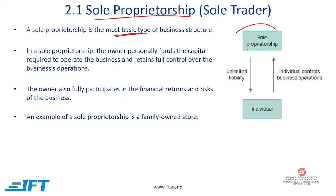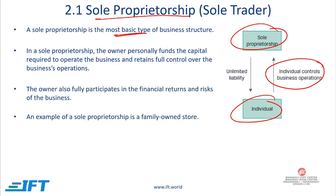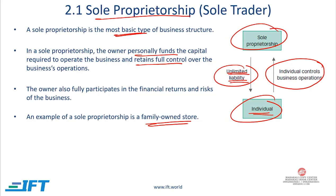The sole proprietorship is the same as the individual, because the individual not only provides capital but also controls the business operations. If anything goes wrong in the business, the individual is liable without limit — there is unlimited liability. This individual personally funds the business and retains full control. It is very well suited for a small business like a family-owned store.